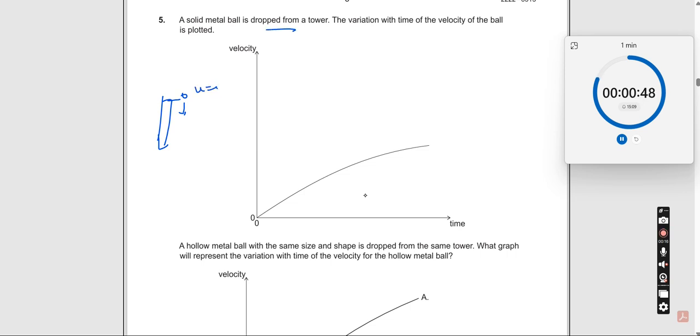Dropped, which means the initial velocity is zero. The variation with time of the velocity of the ball is plotted. Now we need to see velocity is going down like this. How should the velocity actually vary? When the ball actually comes down you should get v equal to u plus at, and here a is equal to g.